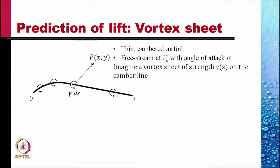So what we do is we predict the lift by introducing a vortex sheet in a similar manner as we did with the source sheet. This vortex sheet is now laid along the camber line of the aerofoil. The thickness of the aerofoil does not contribute to the lift.